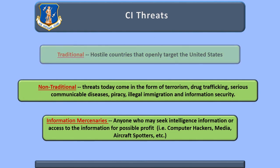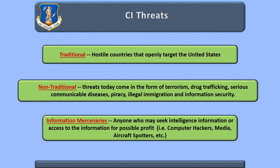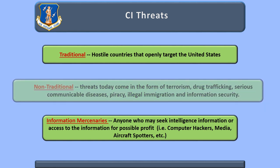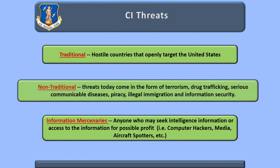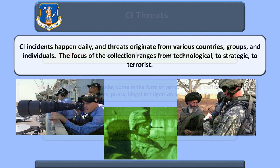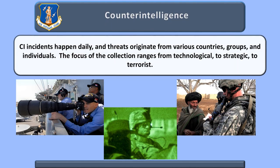The traditional threat: for more than 40 years, the United States prepared for a conventional war against the Soviet Union and its allies. The Cold War affected every facet of operations, from weapons procurement to the development of tactics to training at the combat training center. Non-traditional threats today come in the form of terrorism, drug trafficking, serious communicable diseases, piracy, illegal immigration, and information security. Counterintelligence programs provide warning and protective measures against both traditional espionage and non-traditional economic theft of U.S. equities. Failure to protect our economic and security interests would impact America's prosperity at home and abroad.